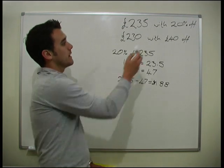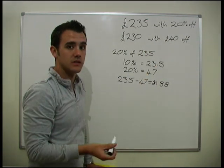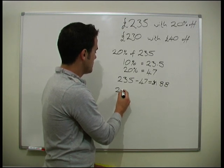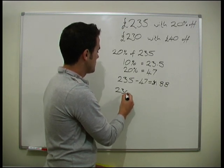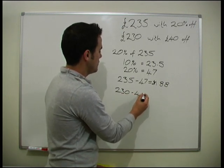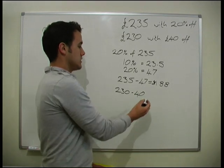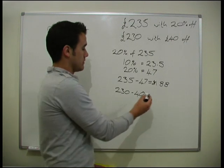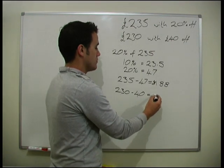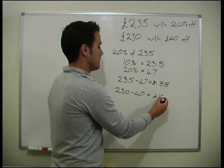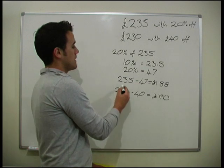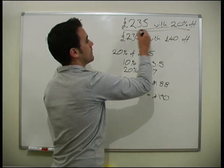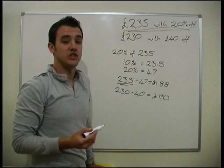What about the £230 TV? That one has £40 off, so you do 230 minus 40, which gives us £190. So we found that the first shop is actually the cheapest one at £188.